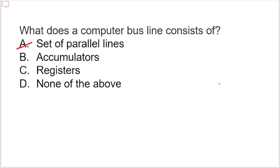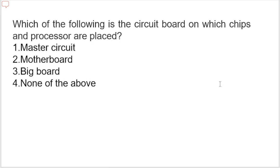Which of the following is the circuit board on which chips and processors are placed? Options are: master circuit, motherboard, big board, or none of the above. The correct option is motherboard. The motherboard is a circuit board that holds together almost all parts of the computer except input and output devices. Each motherboard has a chipset, which is a collection of controllers and chips. All crucial hardware like CPU, memory, hard drive, and ports for input and output devices are located on the motherboard.